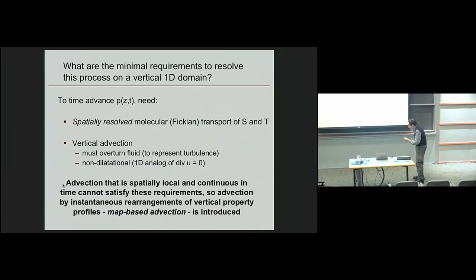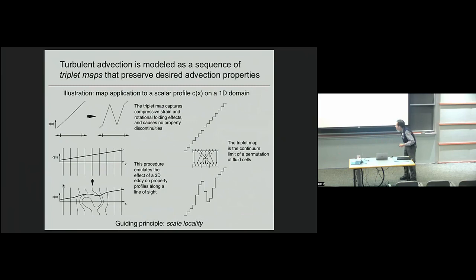Our machine is going to live on a vertical 1D domain and very importantly, you saw how important the diffusivities were, so therefore we're going to spatially resolve the molecular transport with the correct diffusion coefficients. We're going to introduce what I call map-based advection.